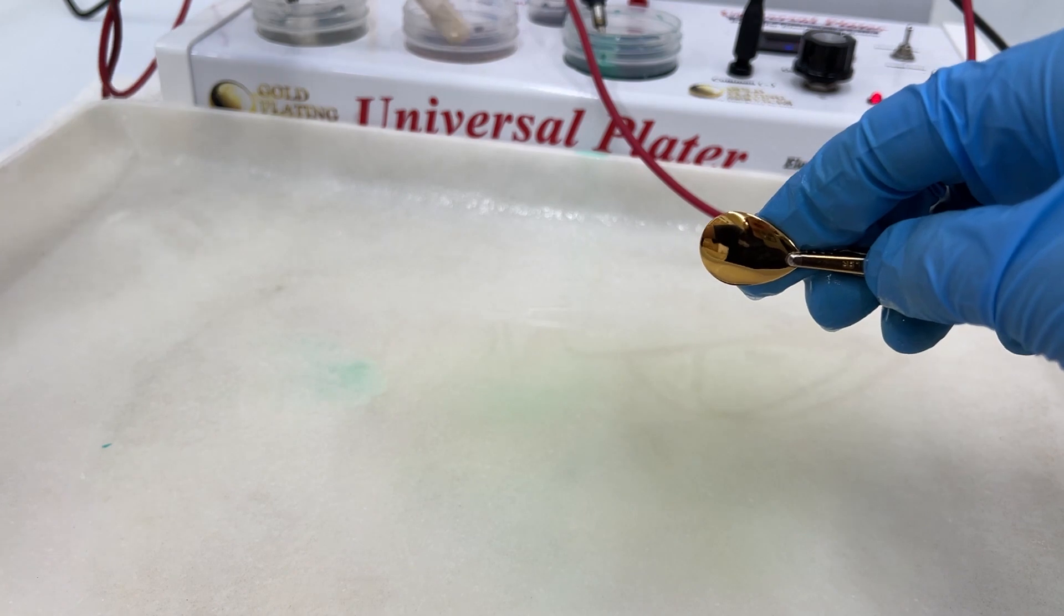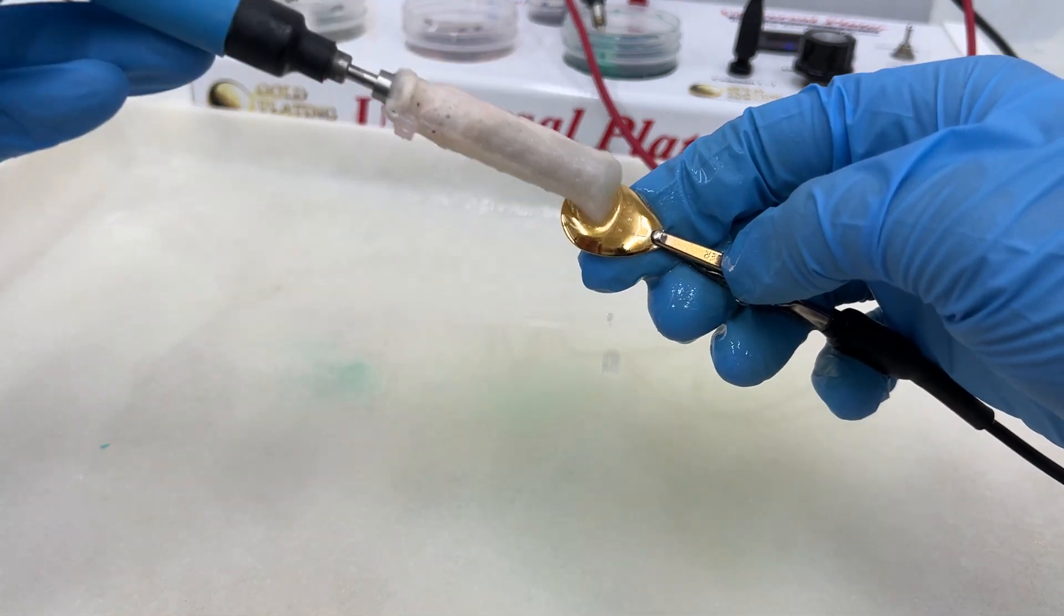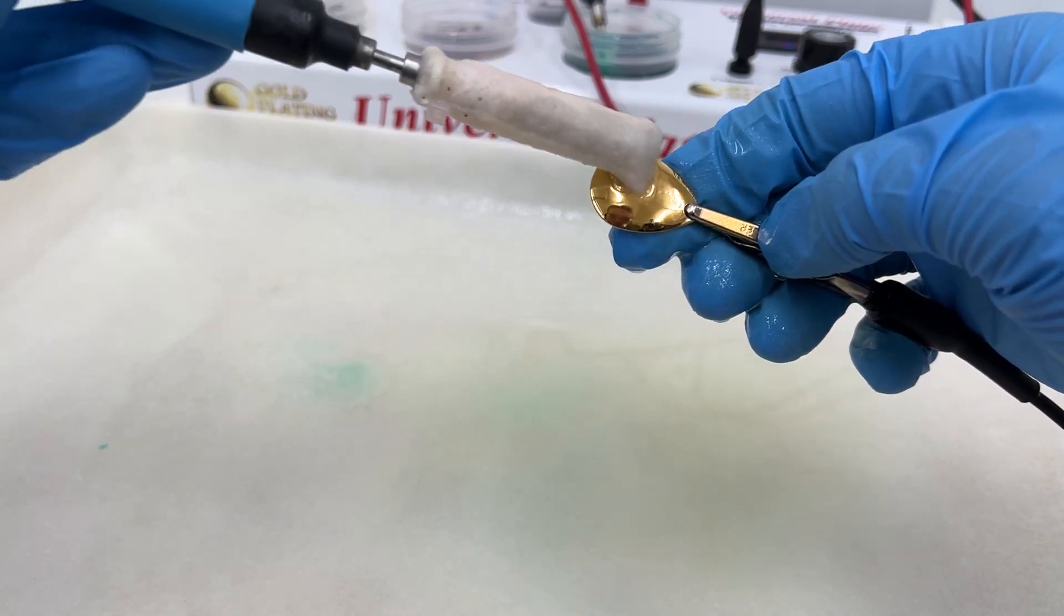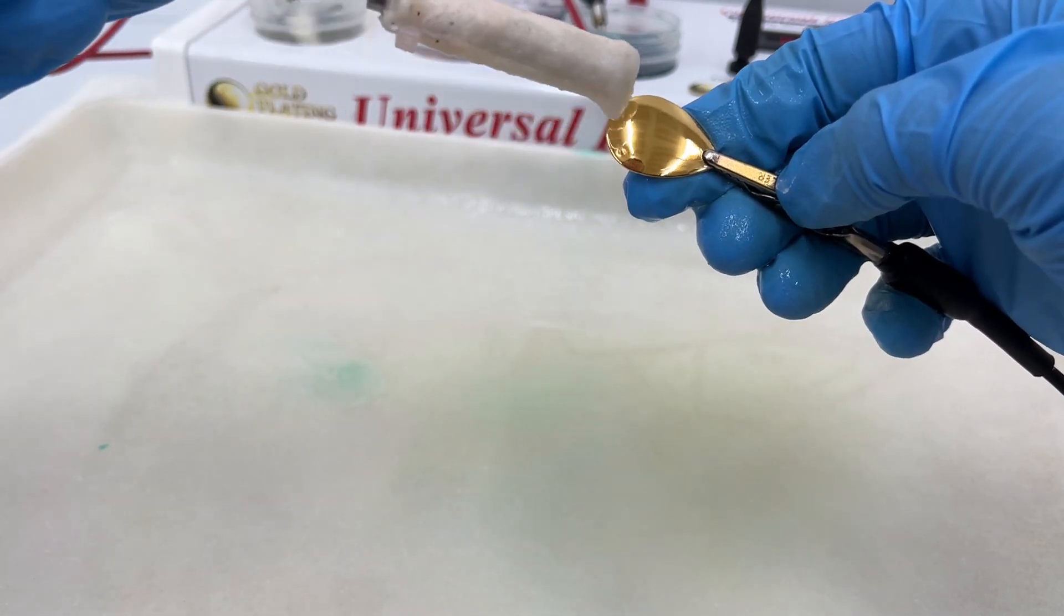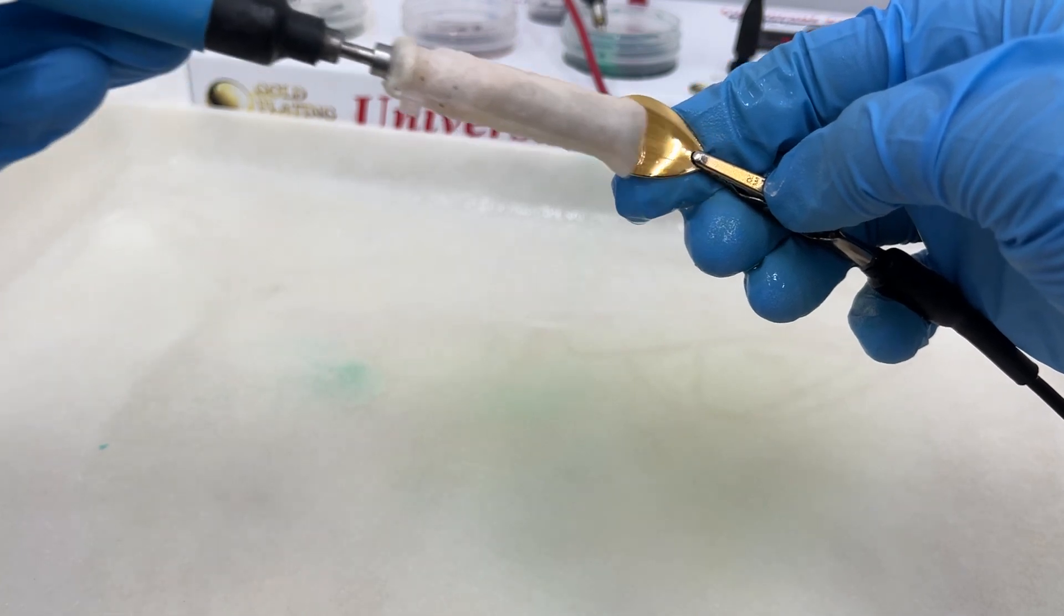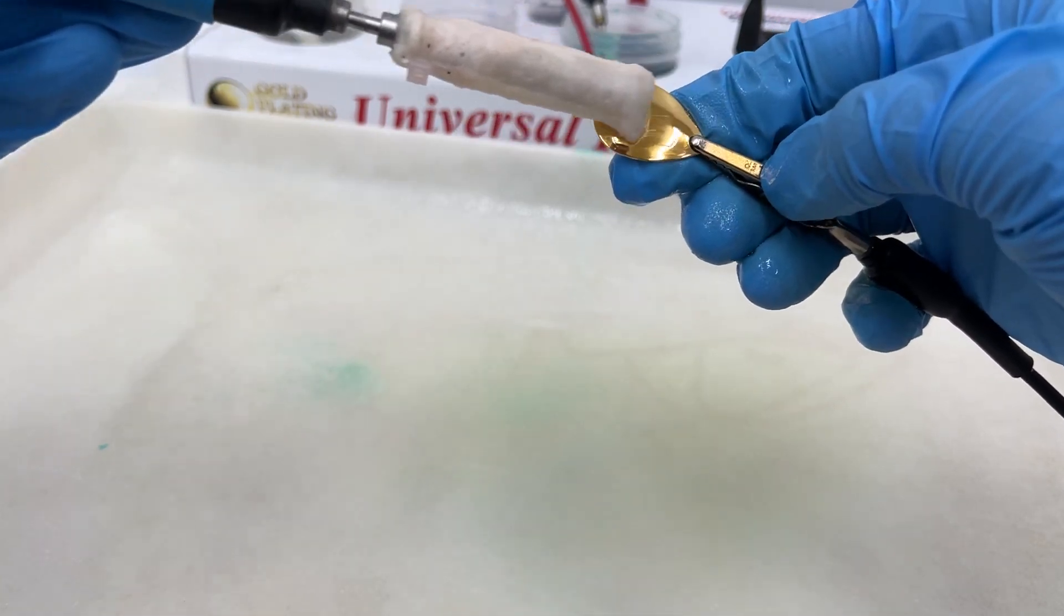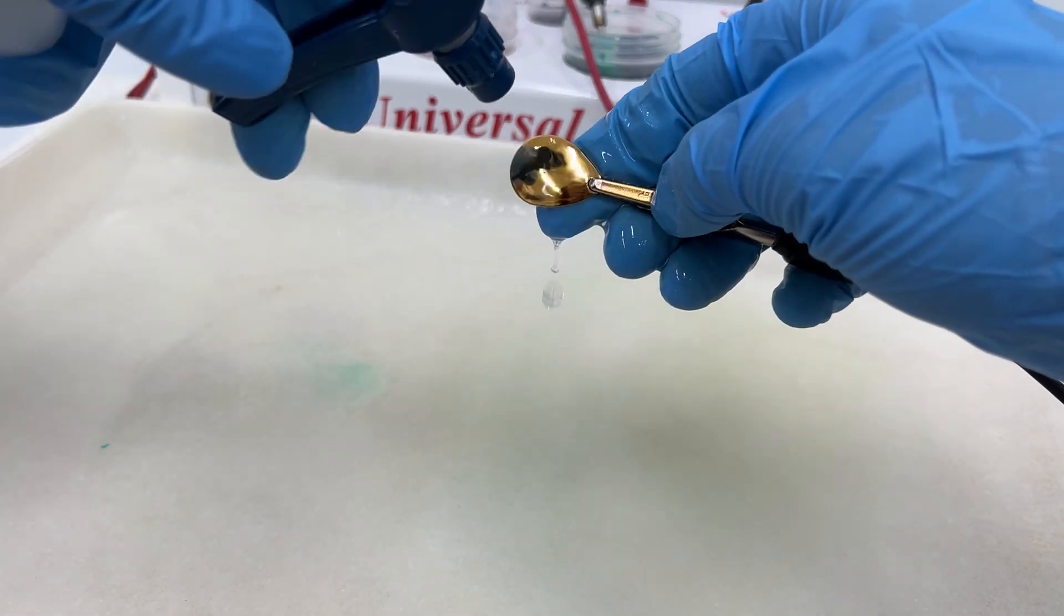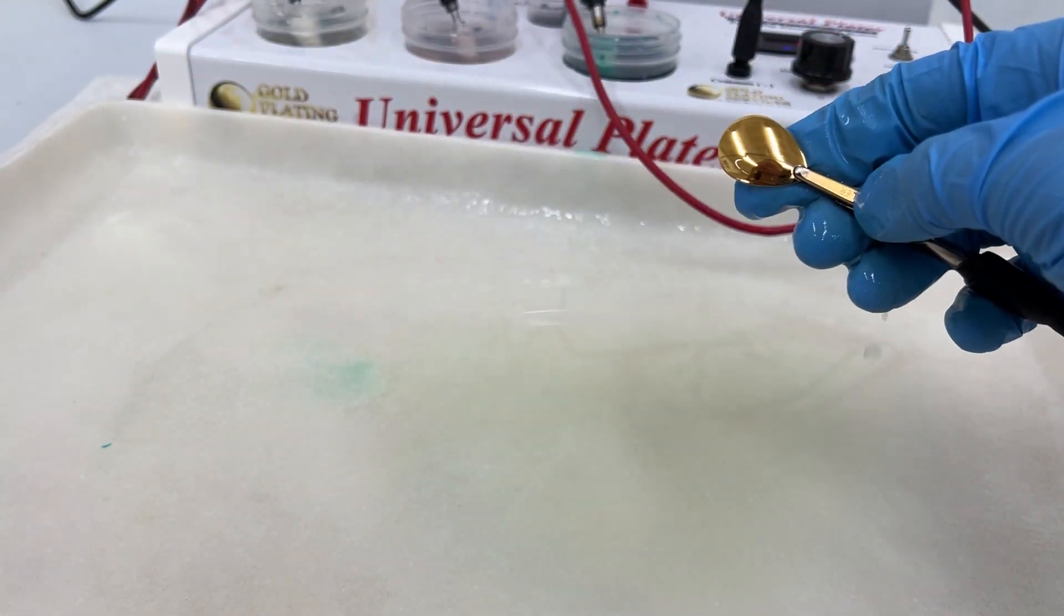Now we'll move on to our surface activator. You can see that it's working as well because it's bubbling. We'll do this just really quick for about 10 seconds. There we go, and then we'll turn our machine down.